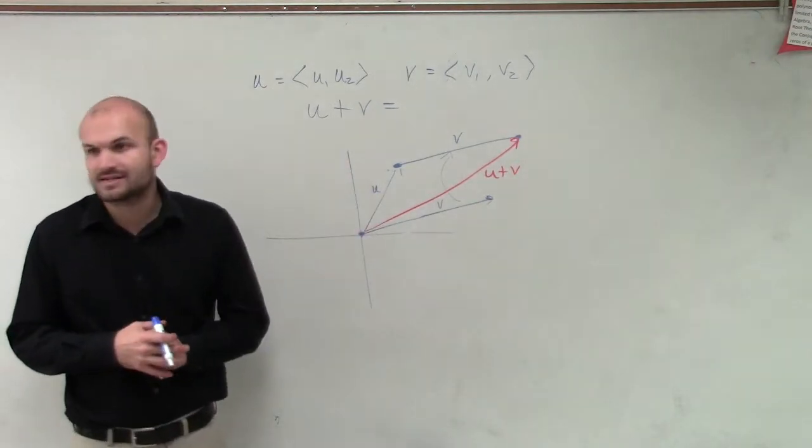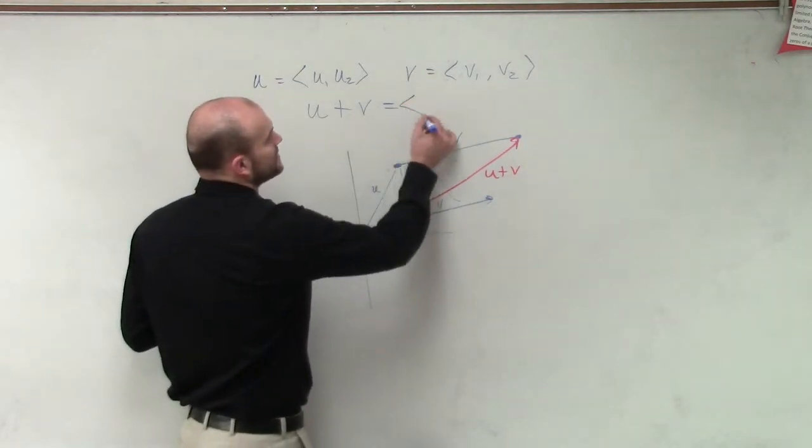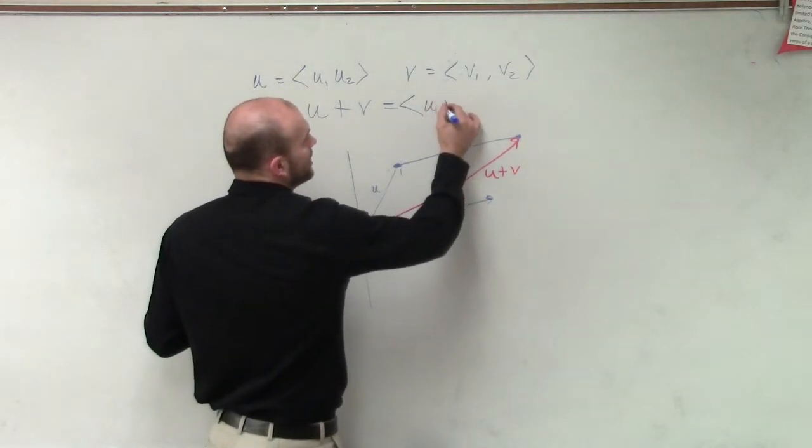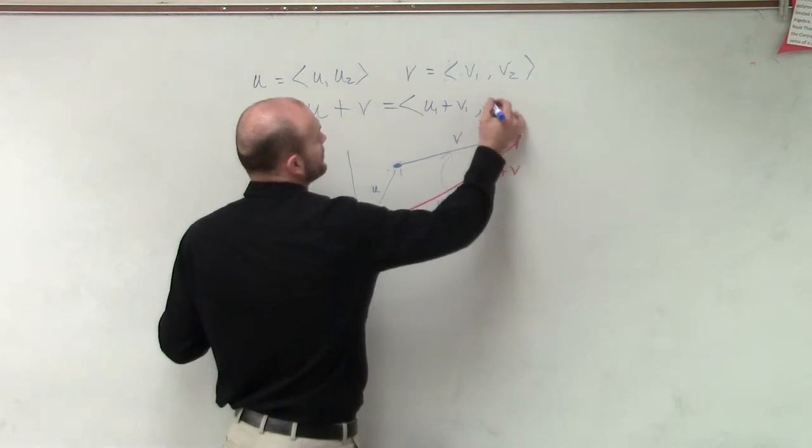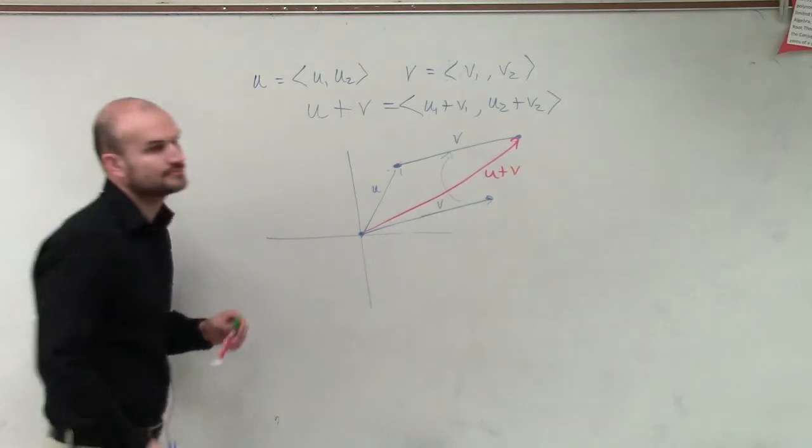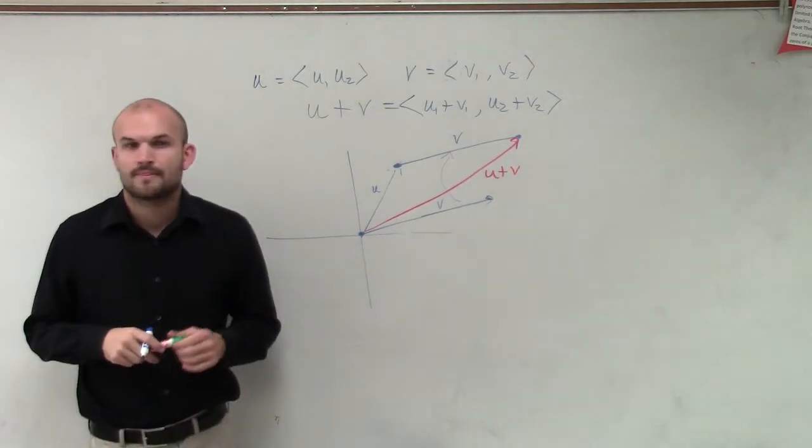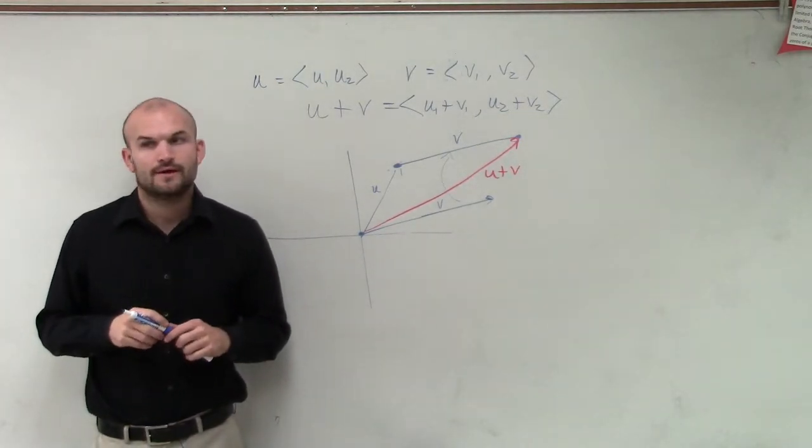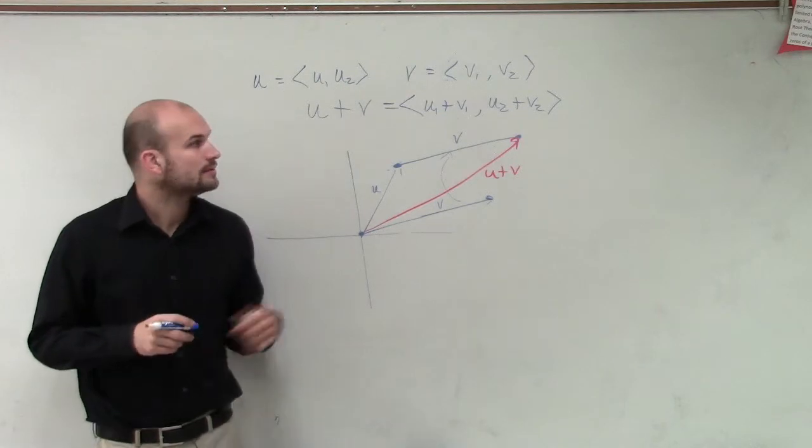So algebraically, how is that going to look? Well, all we need to do to find that algebraically is u1 plus v1, comma, u2 plus v2. That's pretty much it.